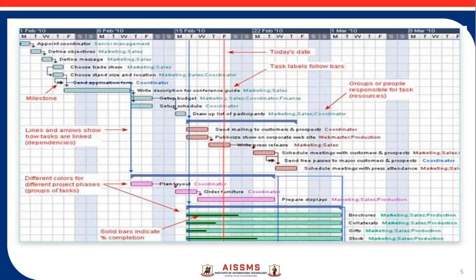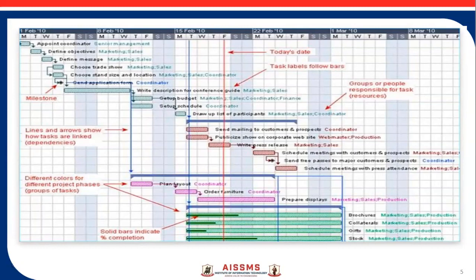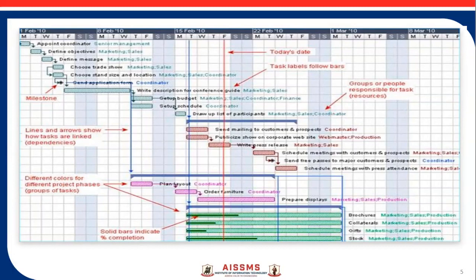Here is one more example of the Gantt chart — a more detailed one. Here we can show milestones, indicating whether a particular milestone has been achieved. We can show dependencies between different tasks and use different colors for different activities. A line shows how much a particular task has progressed at any stage, so you can visualize multiple things about the project.